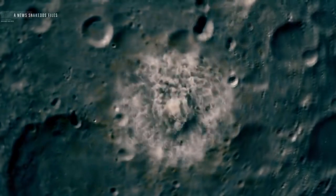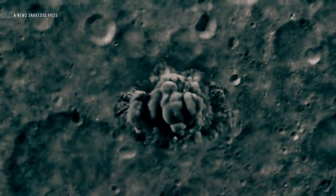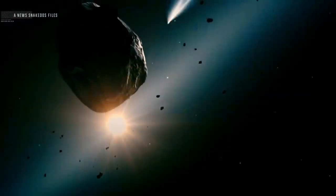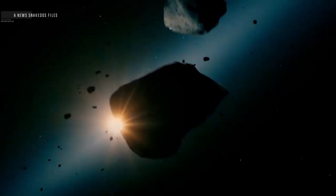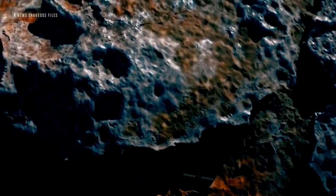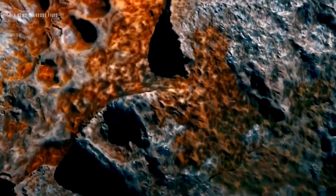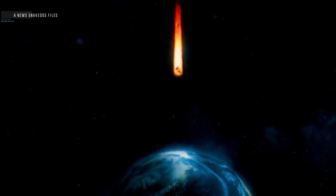Se espera que para entonces la nave espacial DART esté lista para estrellarse y cambiar ligeramente su curso utilizando una técnica llamada desviación cinética. Como se habló en el vídeo de News Snack 2, algo se encuentra tras la gran mayoría de ellos. Con suerte sabremos cómo reaccionan los asteroides al ser golpeados y si cambian de rumbo. Podríamos estar listos para protegernos contra el verdadero asteroide apocalíptico.